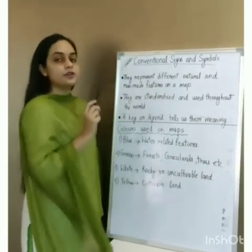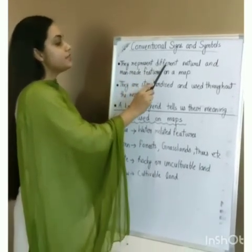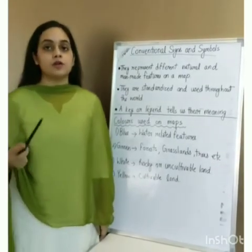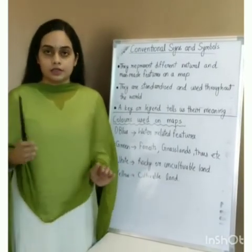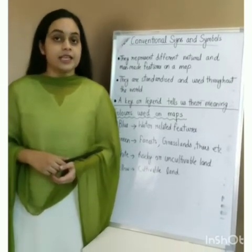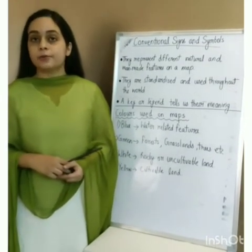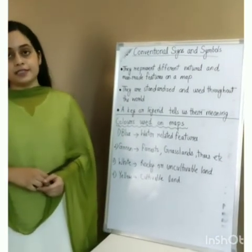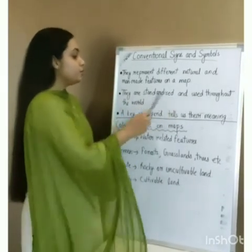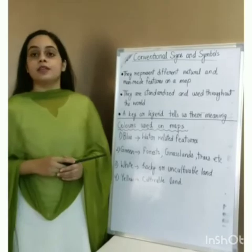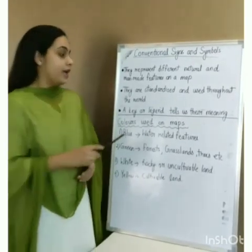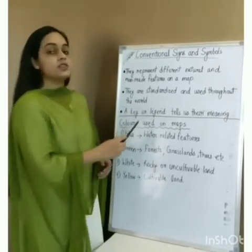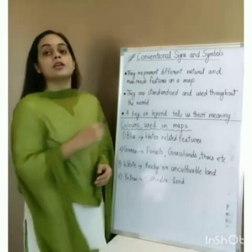The next topic is conventional signs and symbols. These symbols represent different natural and man-made features on a map. For example, if you want to show a mountain on a map, you cannot exactly represent it because it is very large, so you use certain symbols to represent those mountain ranges. Those symbols are known as conventional signs and symbols. They are standardized and used throughout the world, meaning their meaning remains the same everywhere. A key or legend, which is just like a dictionary, tells us their meaning.